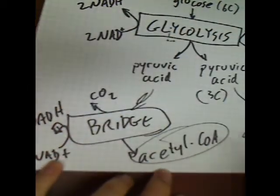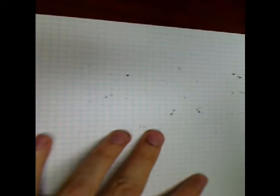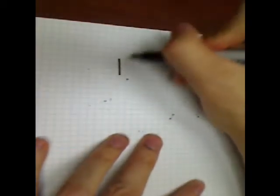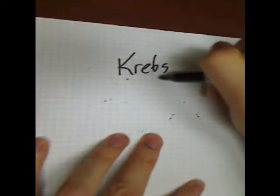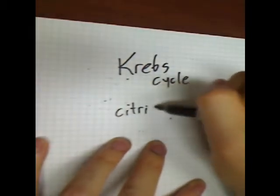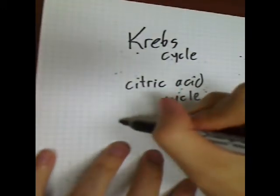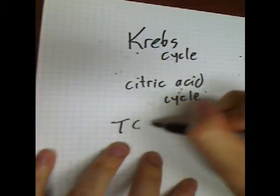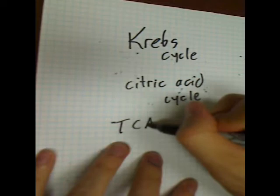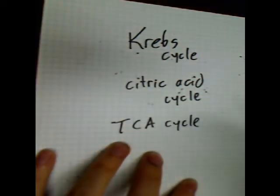These acetyl-CoAs — their next step is what people call the Krebs cycle. Some people call it the citric acid cycle. And some people call it the tricarboxylic acid cycle, or TCA cycle. They all refer to the same thing.